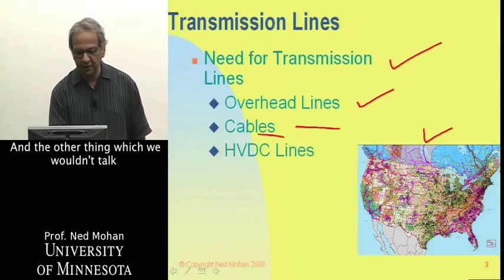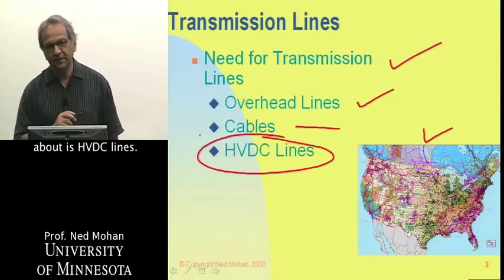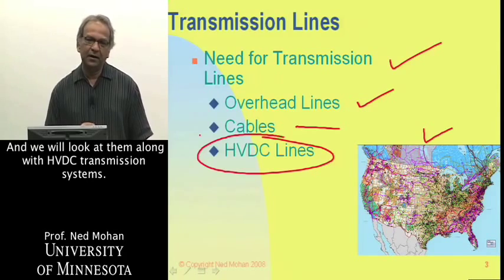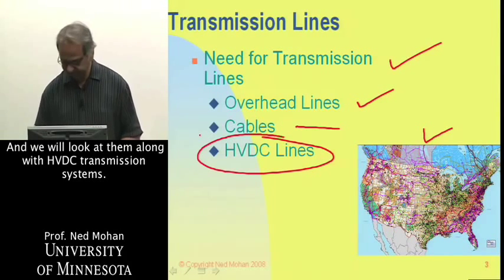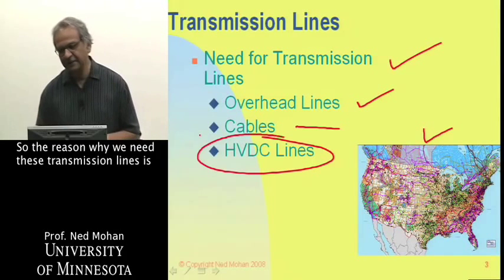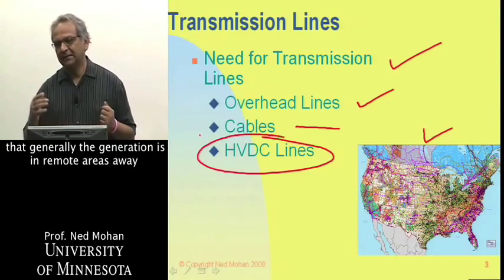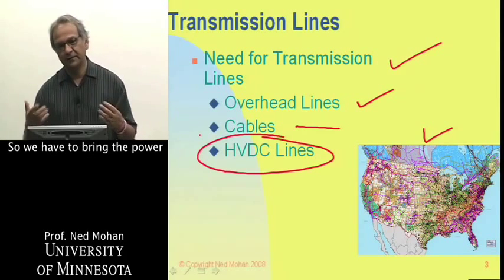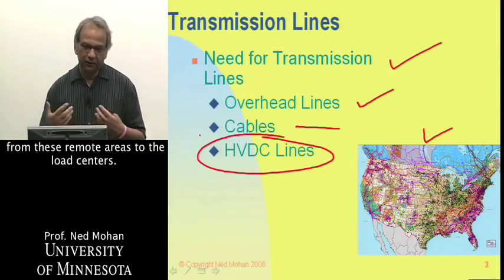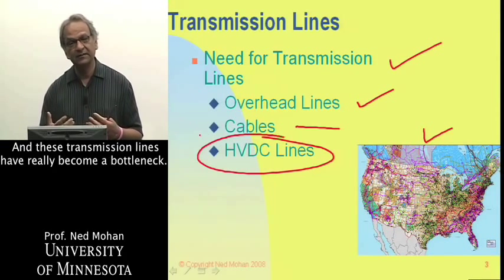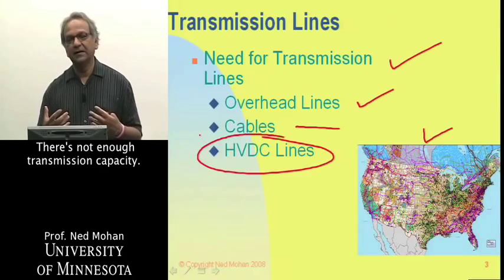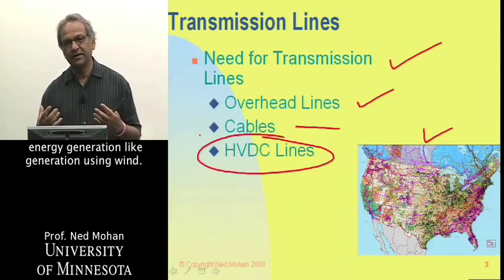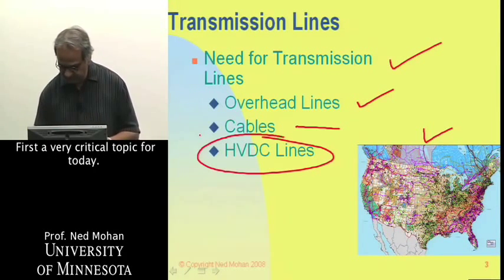We won't cover HVDC lines in this module — they are in some respects quite similar but in a special category, and we will look at them along with HVDC transmission systems separately. The reason we need these transmission lines is that generally the generation is in remote areas, away from metropolitan areas and load centers. Transmission lines have become a bottleneck — there's not enough transmission capacity, and that's one of the things holding back renewable energy generation, like wind.